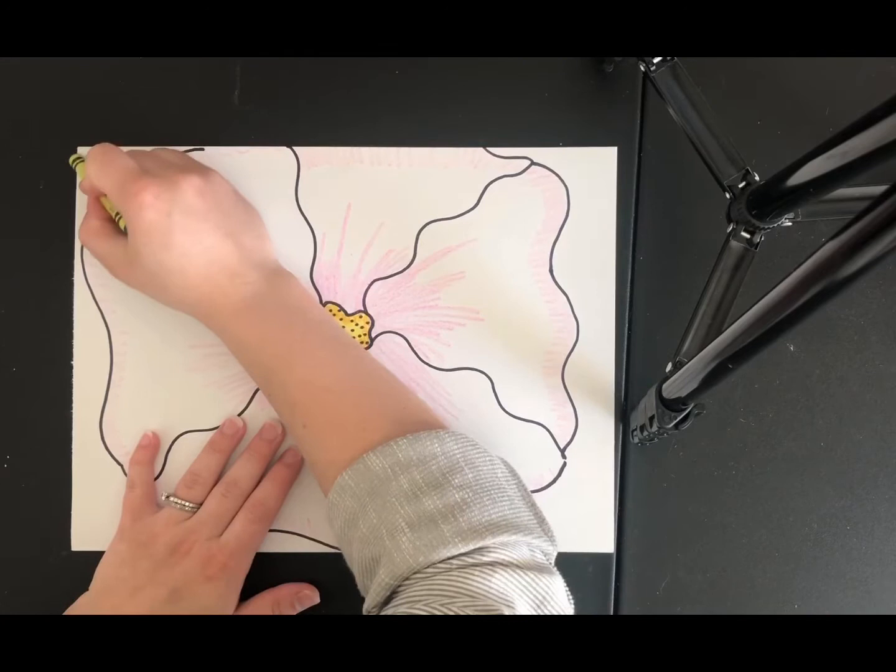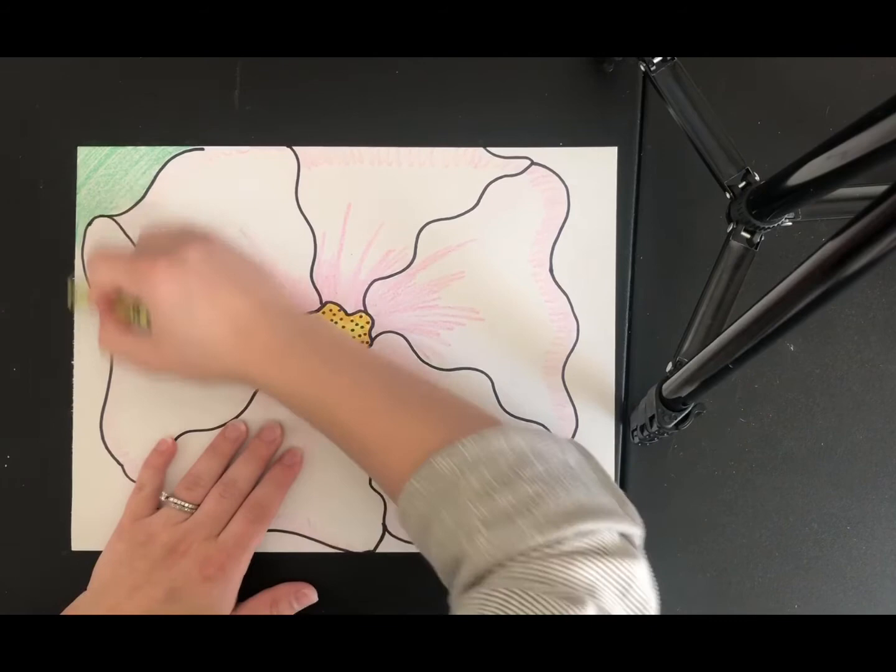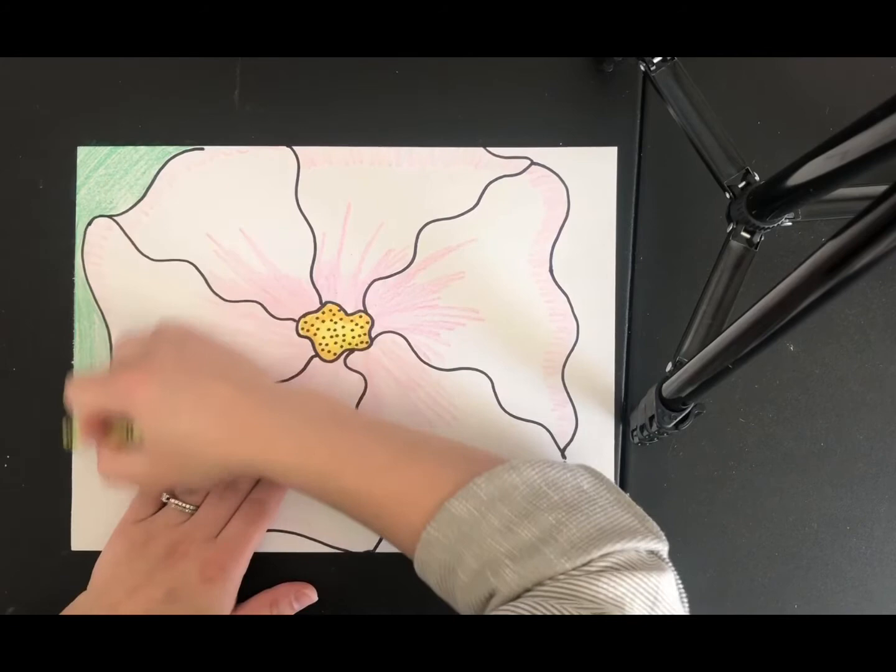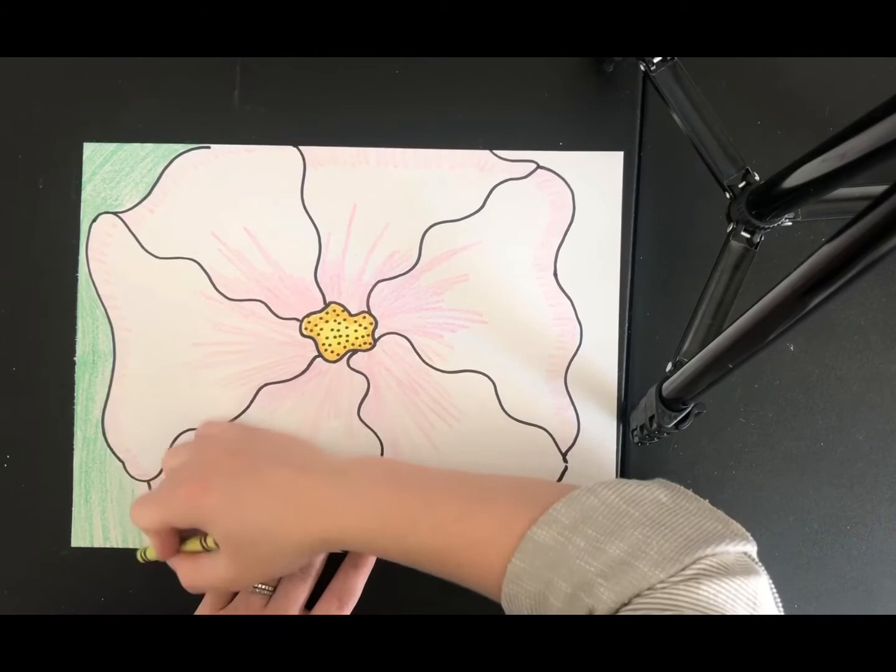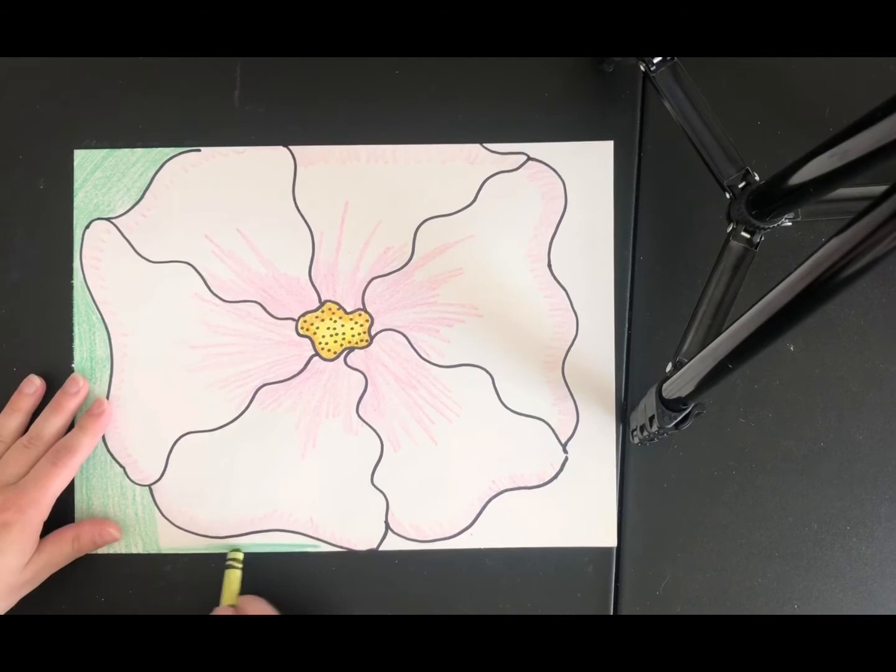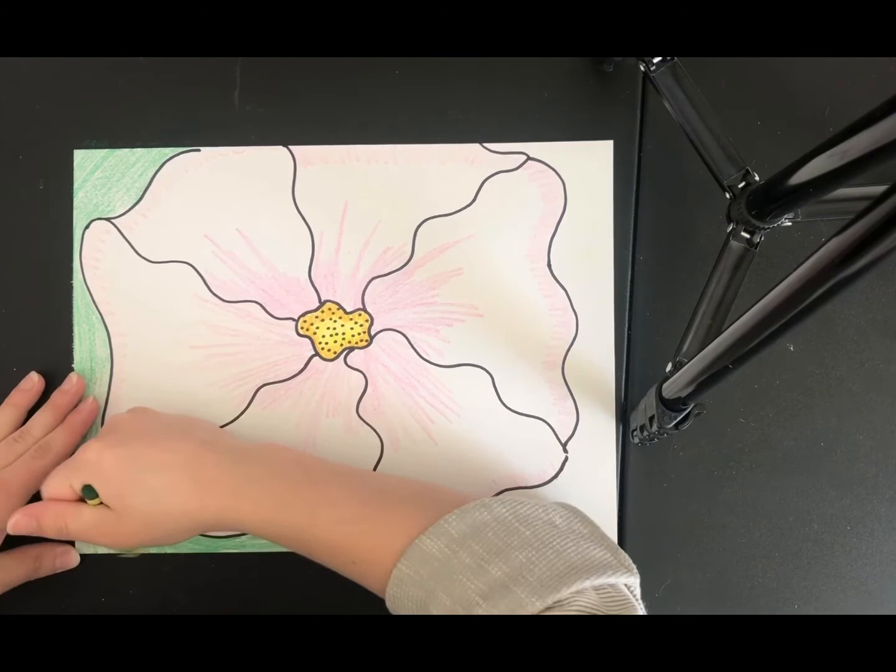So to make my flower stand out more I'm going to go ahead and color around. I only have a little bit of background showing but I want to go ahead and color that background so that my flower stands out a little bit more. I try to keep my crayon coloring in the same direction but occasionally I do need to change directions to fit in those smaller spaces.